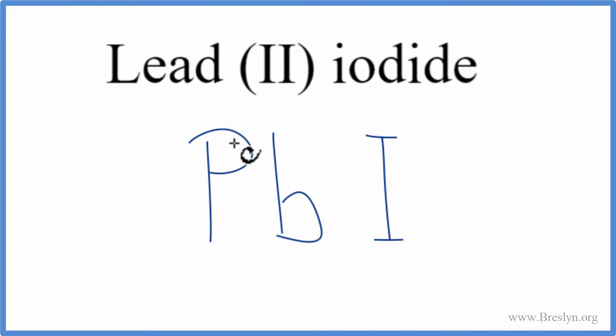Lead, that's a transition metal. We can tell because of the Roman numeral here. And iodine, that's a non-metal. So we have a metal and a non-metal. We have an ionic compound, and therefore we need to look at the charges on each of the elements.